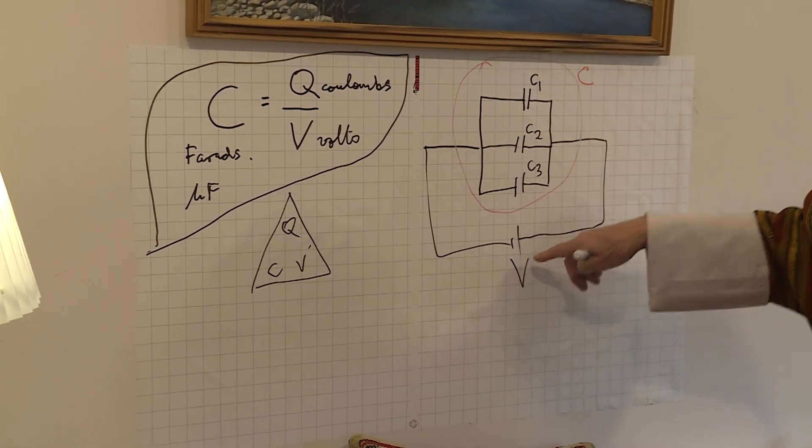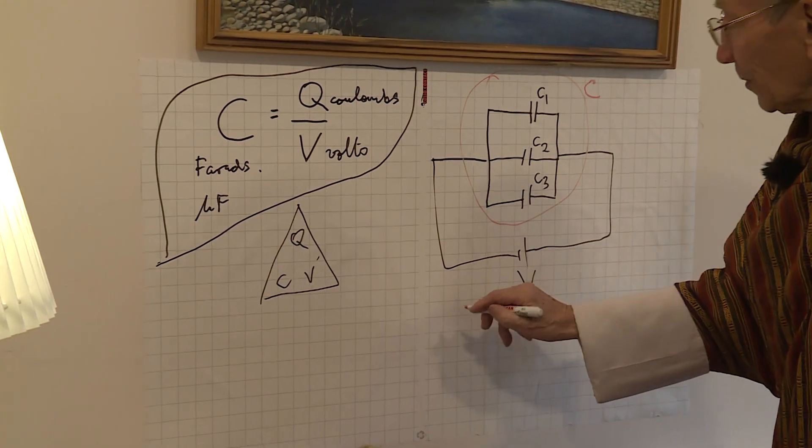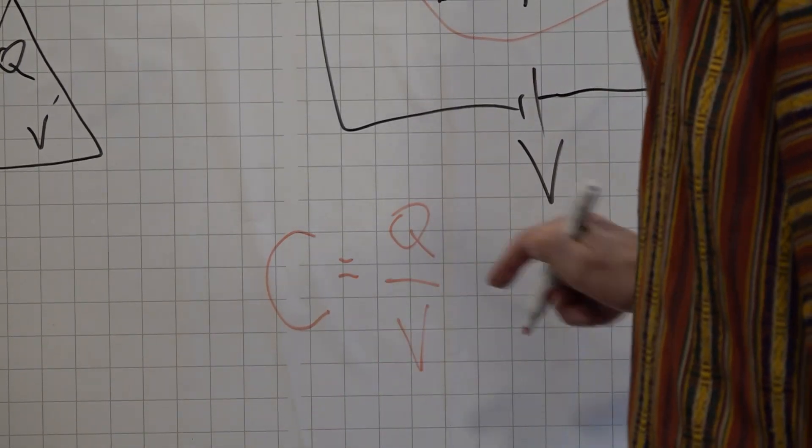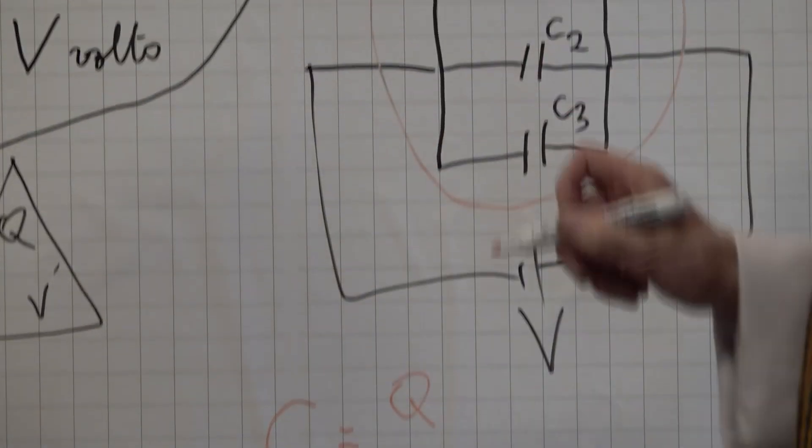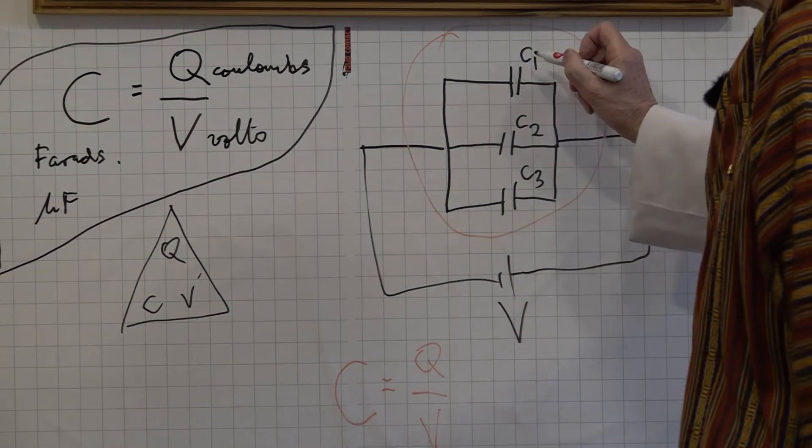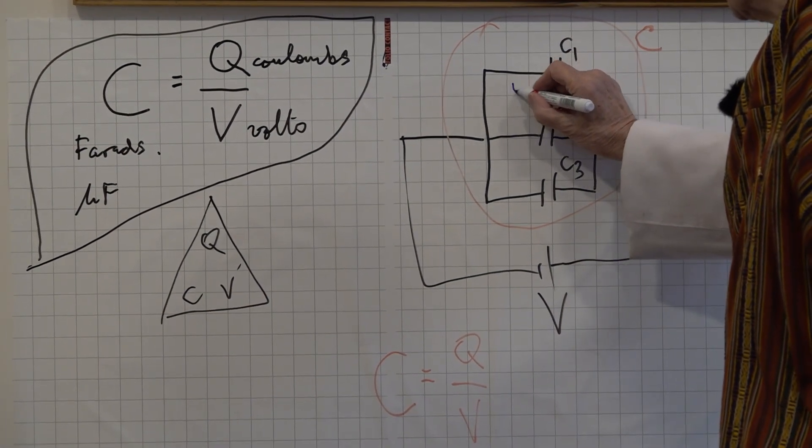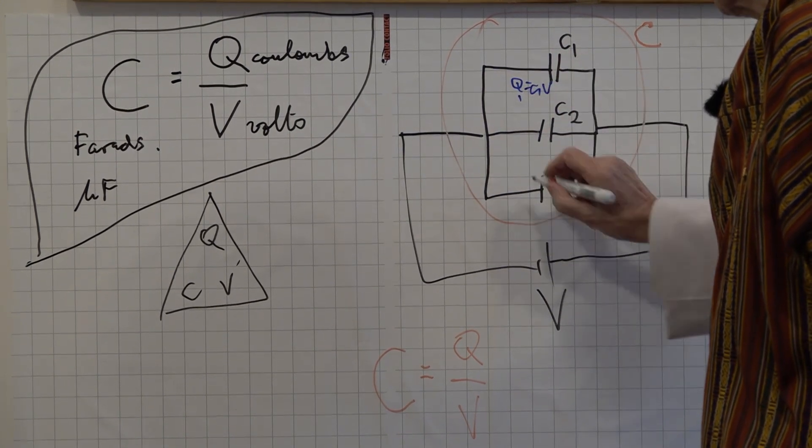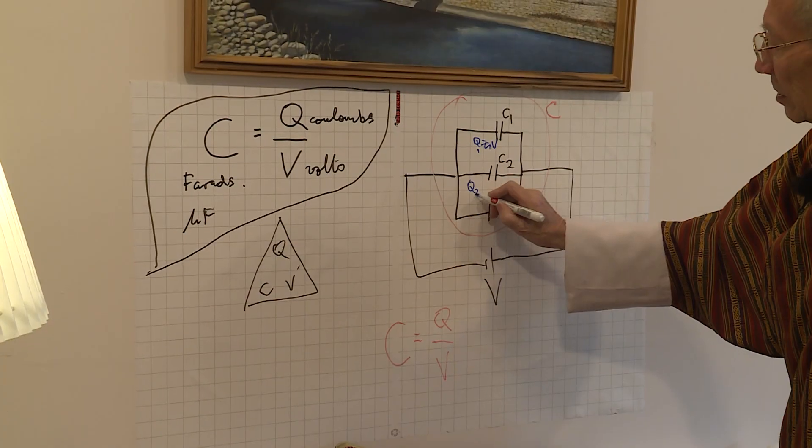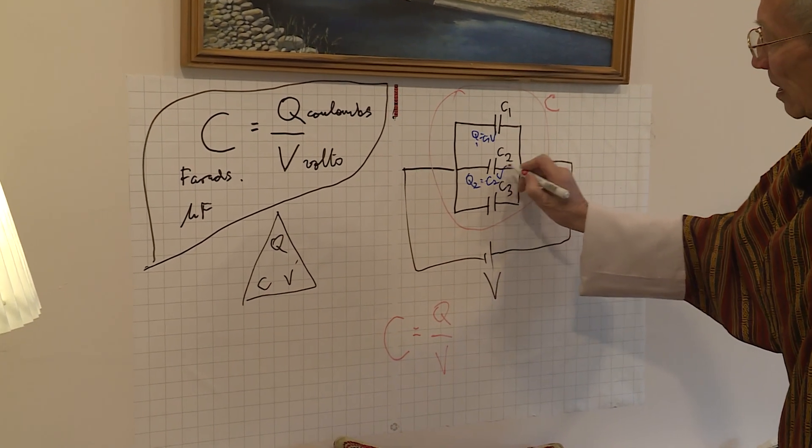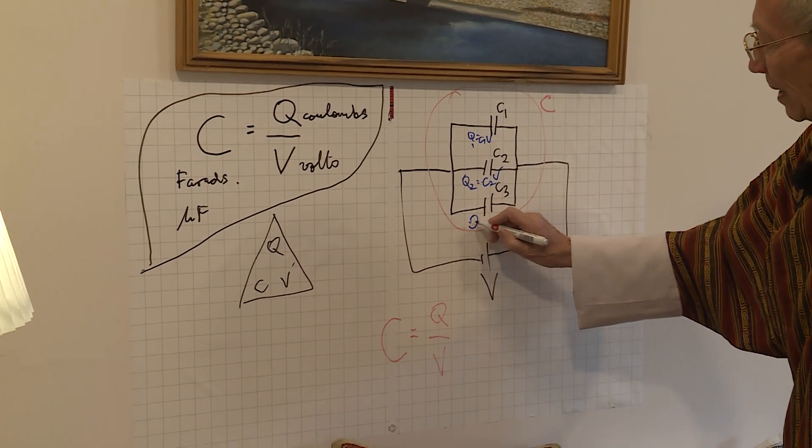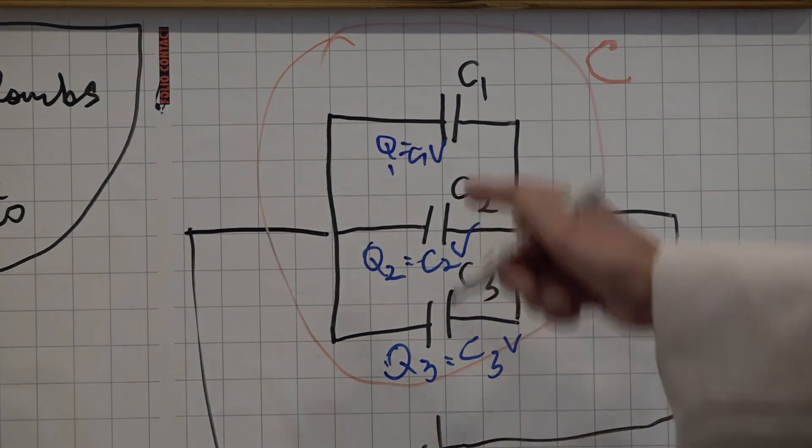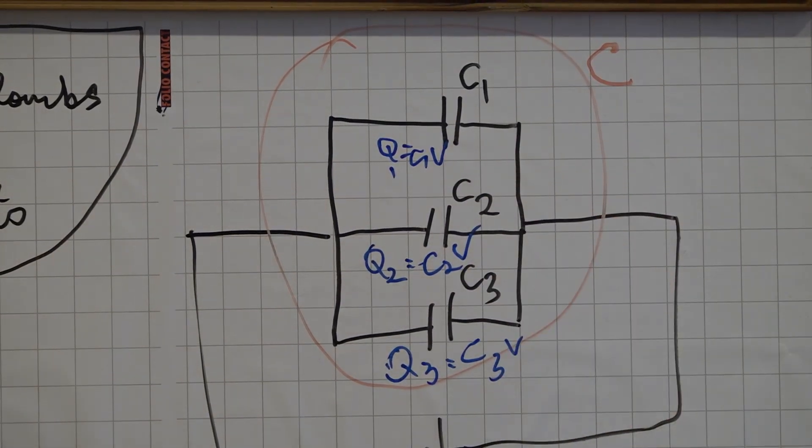So, let's think of that single capacitor as having a capacitance C. What will the voltage across it be? It'll be V. So, C, the big capacitor, will equal Q over V. Now, Q equals CV. So, the charge on that capacitor, Q1 equals C1V. The charge on this capacitor, Q2 equals C2V. The charge on that capacitor, Q3 equals C3V. So, we're looking at the charge on each of those capacitors.